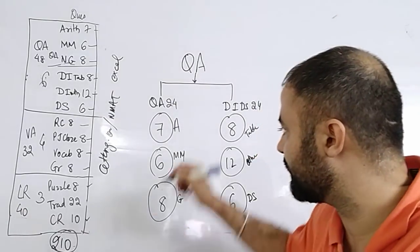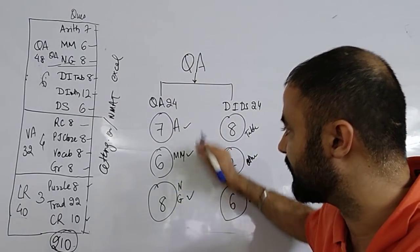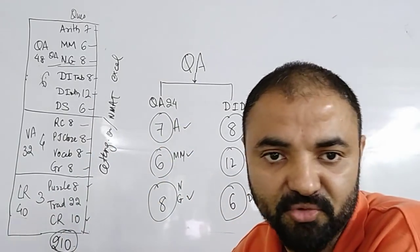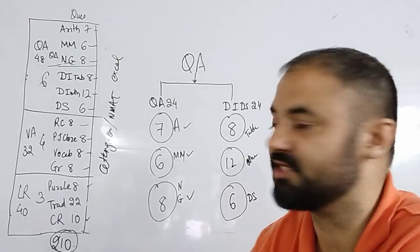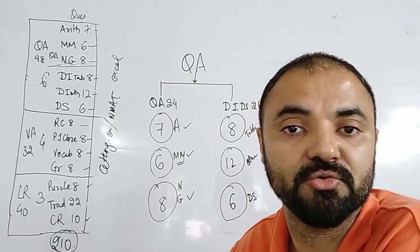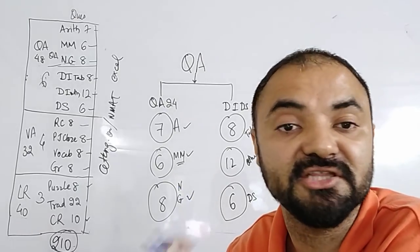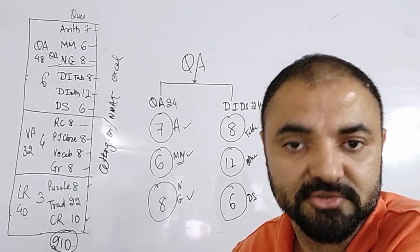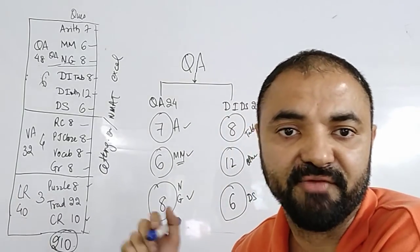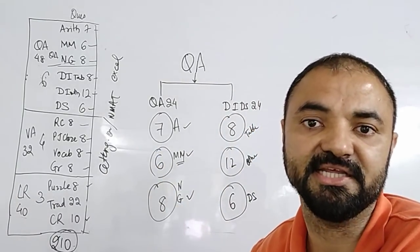I want you to go deep down into every section. You cannot be weak in maths altogether. For example, if you're an engineering student, my main target is always modern maths coordinate geometry. There's always 1 or 2 coordinate geometry questions in NMAT which are easy questions. With the mock tests you have taken so far, find out the breakup and how you are scoring in each of these sections.